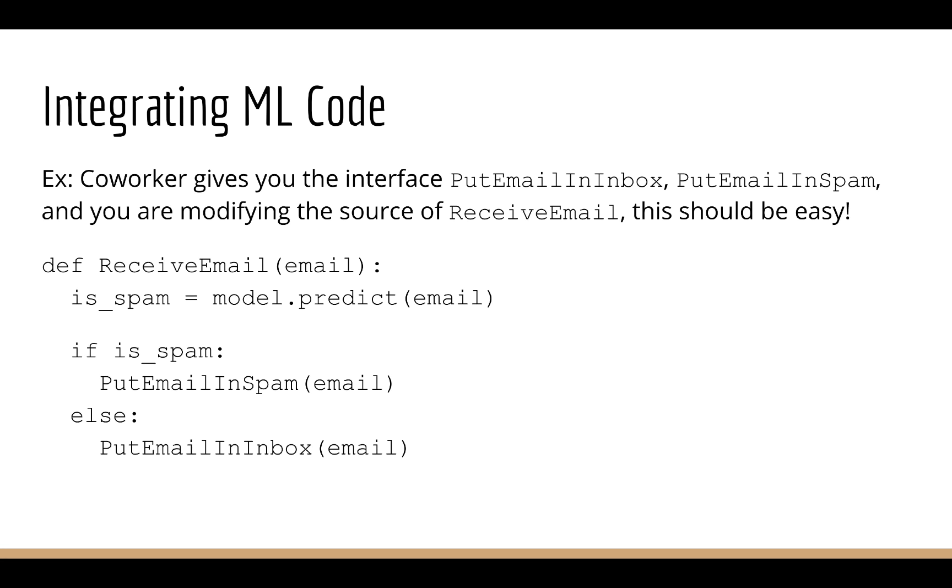So in a real-world scenario, your coworker might write some functions for you, like put email in inbox and put email in spam, and then you have a function receive email, which you're allowed to modify. At this point, it should be pretty obvious how you'd apply your model in this scenario. If this is unclear for you, then what I suggest is improving your general programming skills. Join a team of programmers and get used to working with large code bases. This is really the only way.